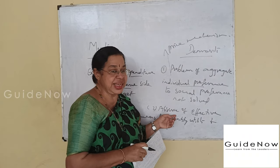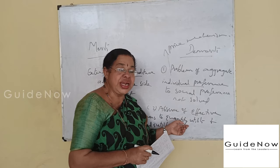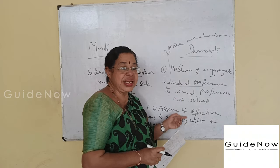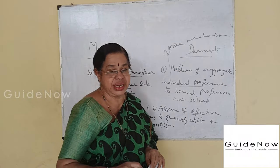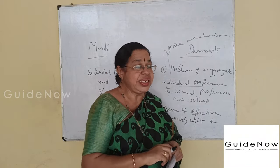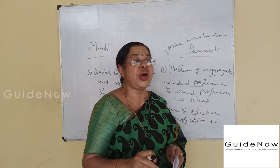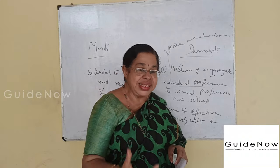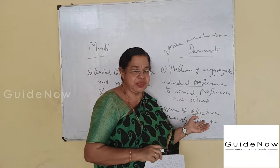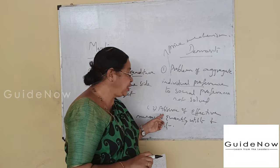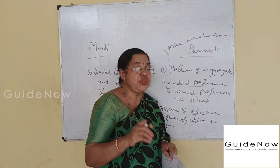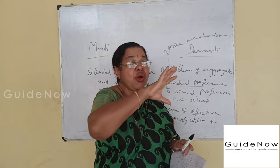The second demerit is the absence of effective means to quantify utility and disutility. It is very difficult to measure utility and disutility. In the case of utility, it is obtained from the benefit enjoyed by the community, but in the case of disutility, it represents the sacrifice involved among individuals because of taxation. Quantitative measurement of both concepts is not possible — this is known as the absence of effective means to quantify utility and disutility.